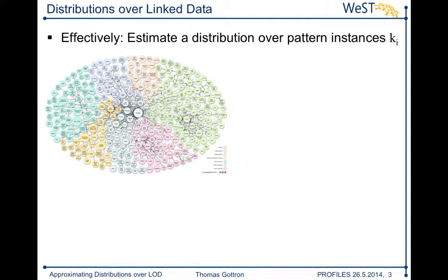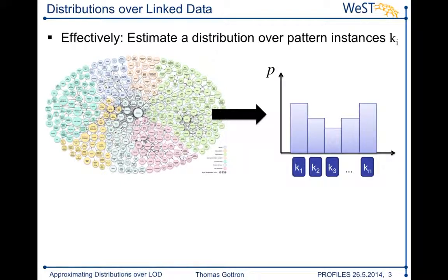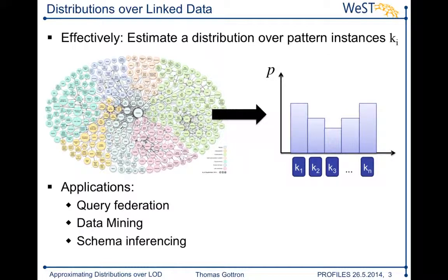I take all the data that is out there, look at which patterns are present, and assess how probable they are to appear. There are several applications that need such information. For example, if you are doing query federation over the linked data cloud, you might want to know how big an intermediate result set is, because this size allows you to optimize the order of joins and when to query which data source. Further applications come from the field of data mining or schema inferencing.